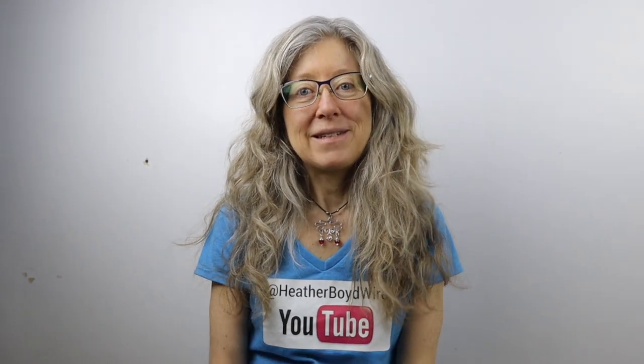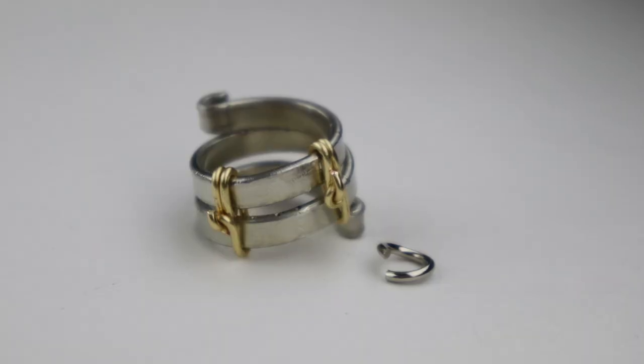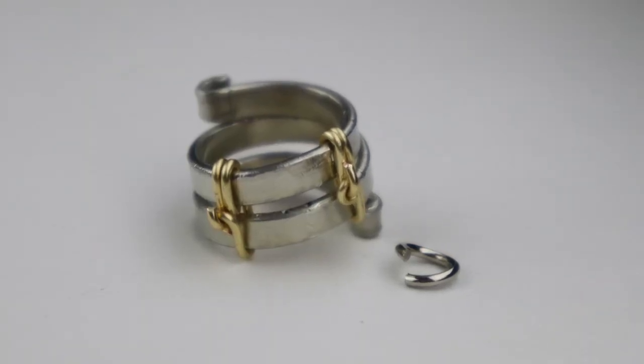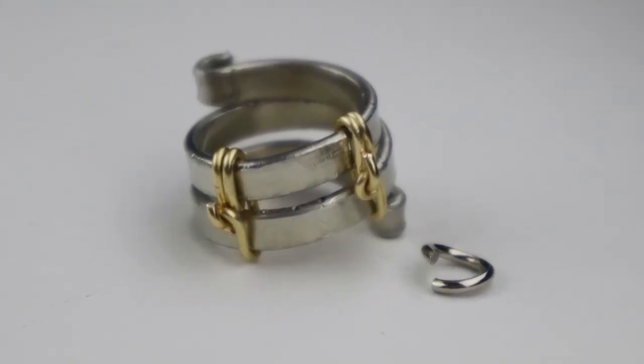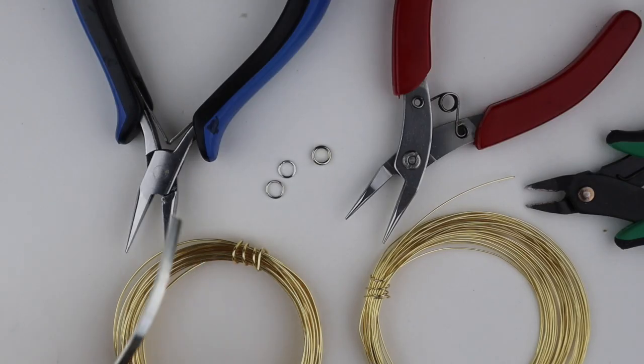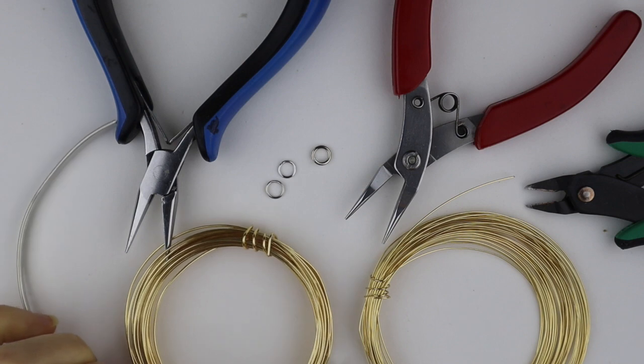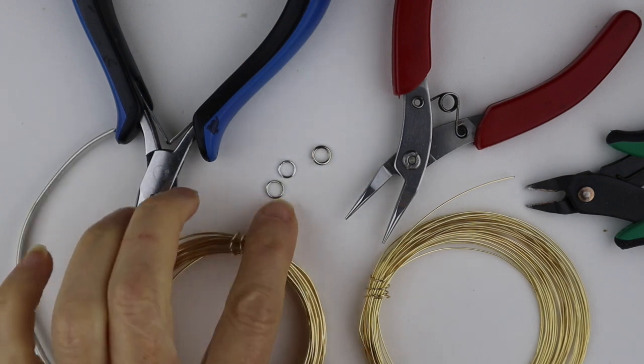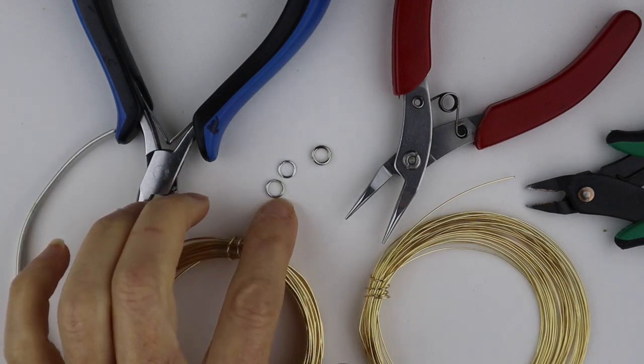Hey there, Heather Boyd Wire here, and today it's Tip Tuesday. In today's video I'm going to show you how to make your own jump ring opener tool. What you're going to need for the project is some flat wire. You're going to need different gauges of wire depending on what size jump rings you want to open up.